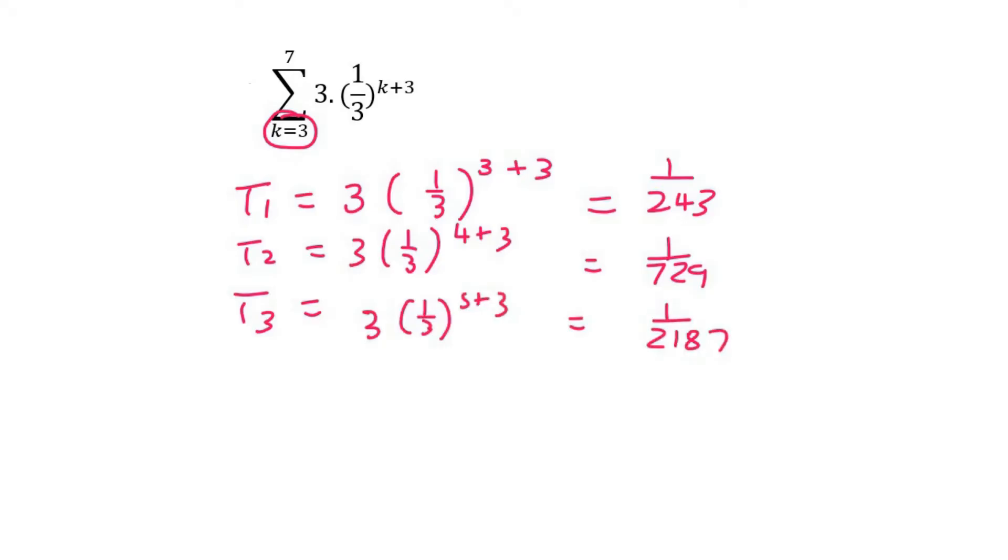We need to figure out if this is arithmetic or geometric. For it to be arithmetic, the difference must stay constant. So you could test out, what is term 2 minus term 1? Well, if you work that out, it's negative 2 over 729.